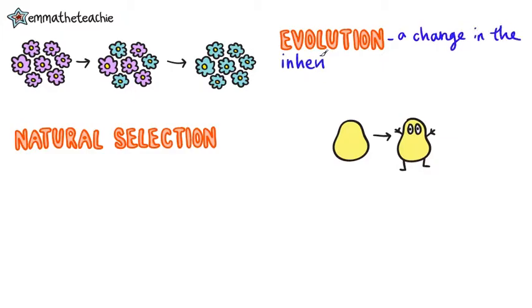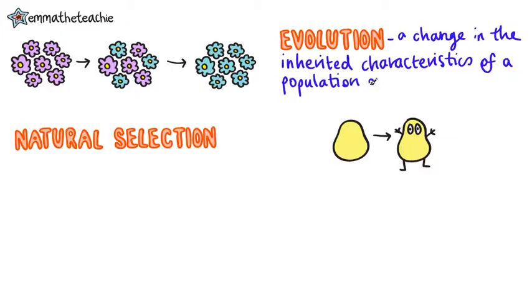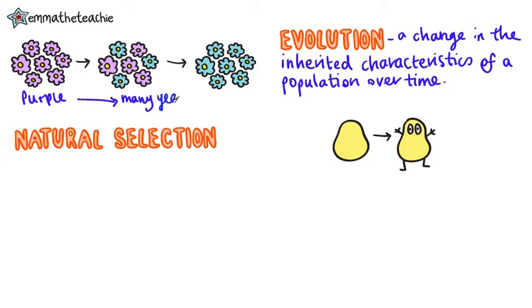Evolution is a change in the inherited characteristics of a population over time. For example, these plants have purple flowers at the start, but over many years they may evolve to have blue flowers instead.